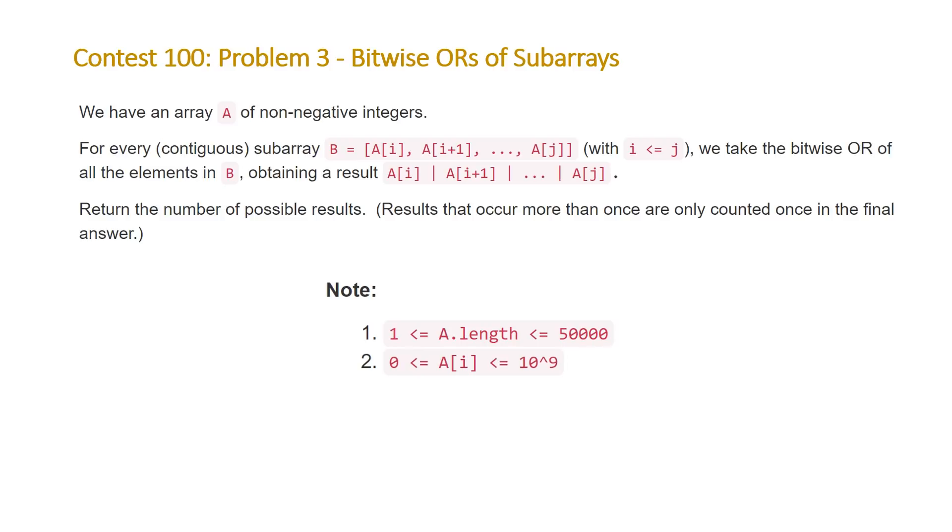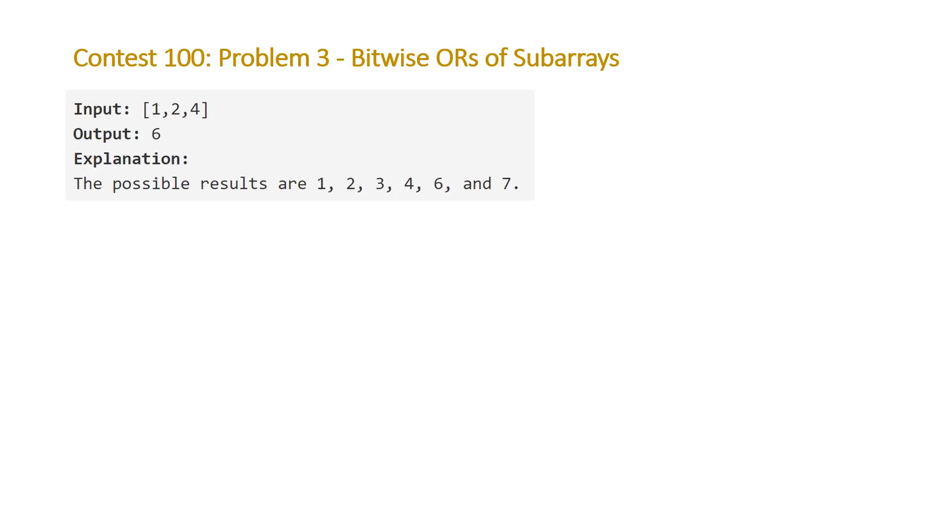Let's take a look at an example that LeetCode provided us with. Here's our example. It gives us the array [1, 2, 4], and the output should be 6. It's telling us that the unique values we can get from taking the bitwise OR of all of the unique subarrays are 1, 2, 3, 4, 6, and 7. What that means is we first need to take each of the subarrays and then perform a bitwise OR operation on all the elements in each one of those subarrays and then keep track of the unique resulting values.